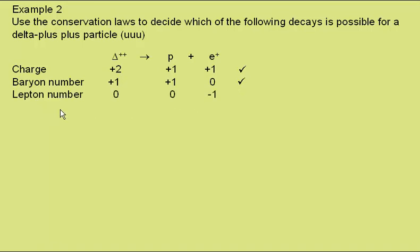In terms of lepton number, the delta-plus-plus is a baryon, not a lepton, and so has a lepton number of nought, as does the proton. But the positron, being an anti-lepton, has a lepton number of minus one. So lepton number is not conserved, and this decay is not possible.